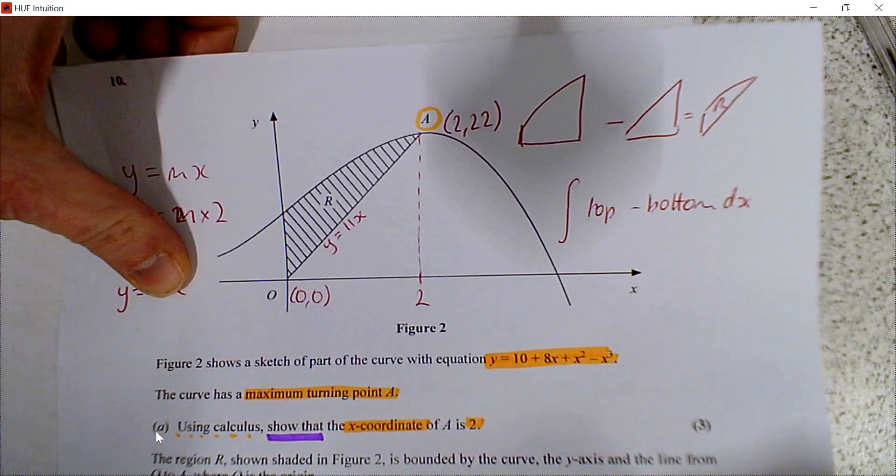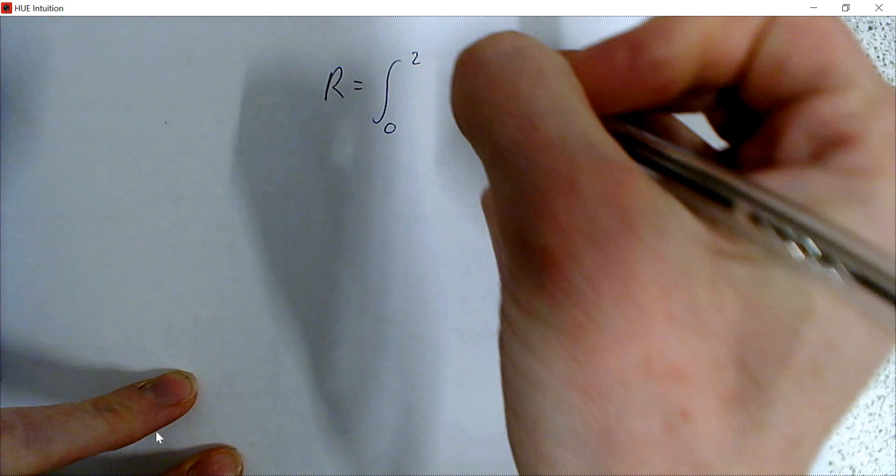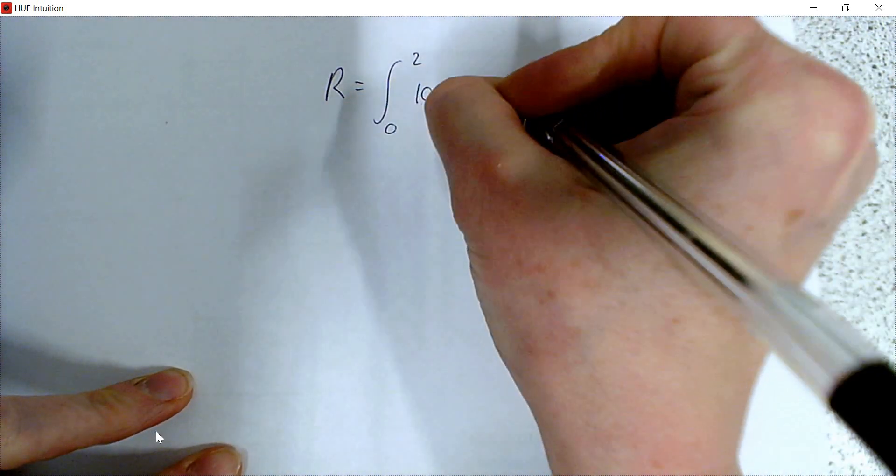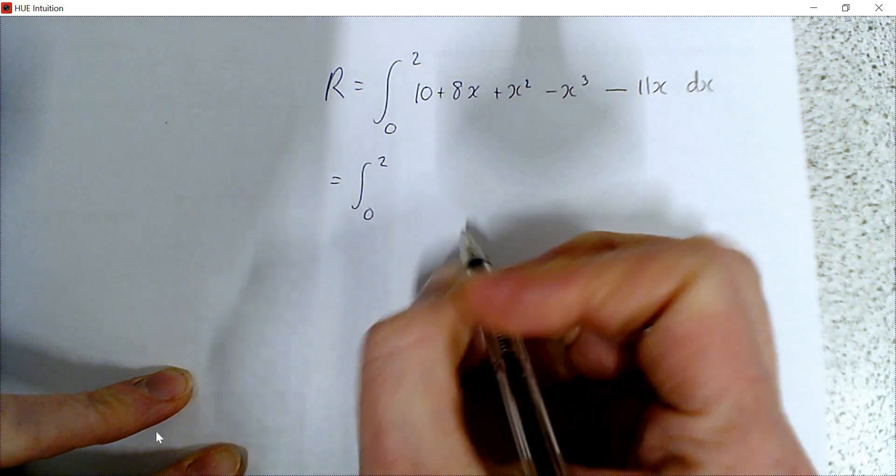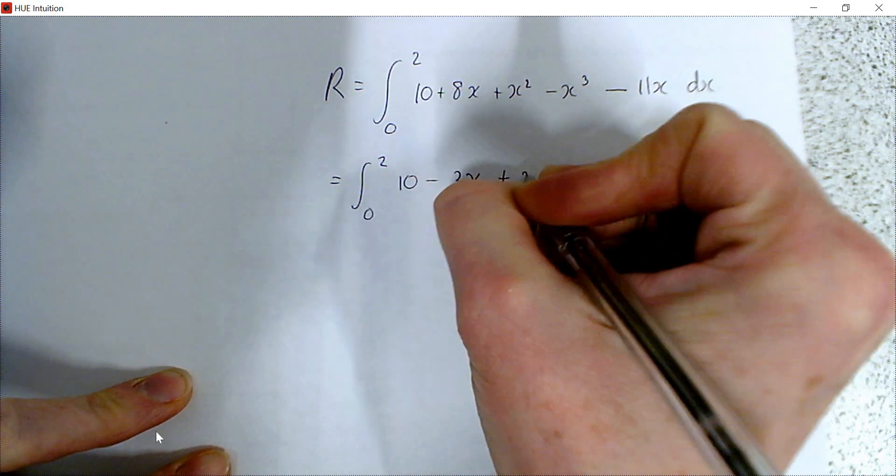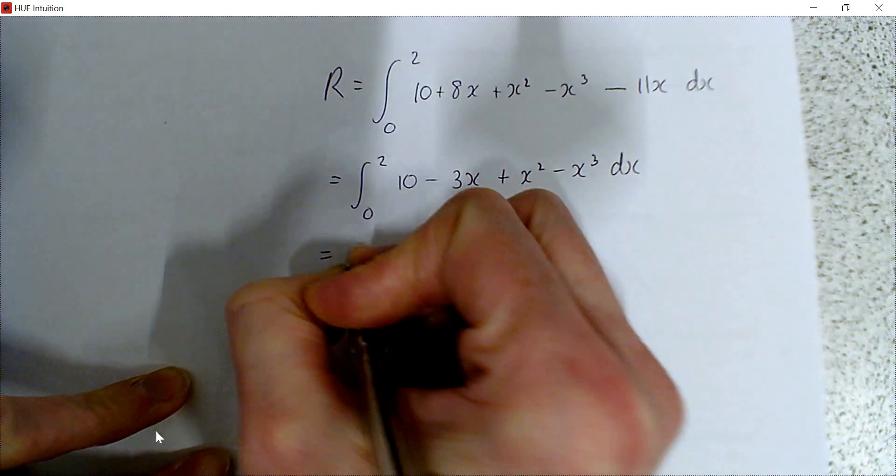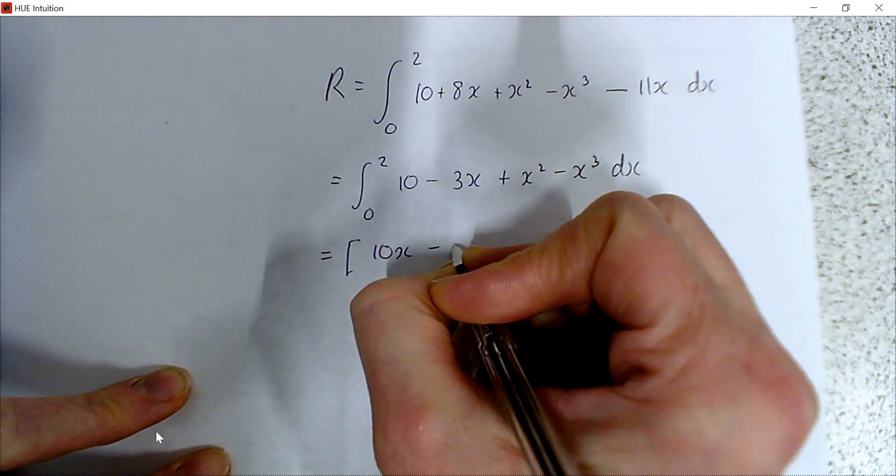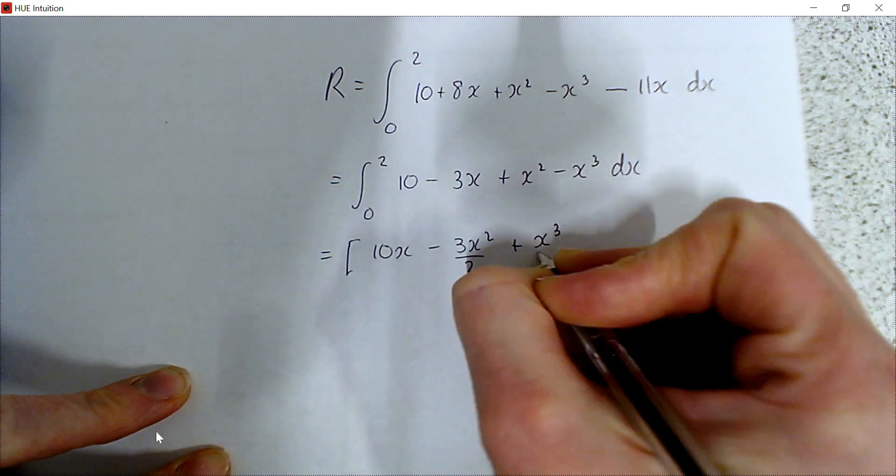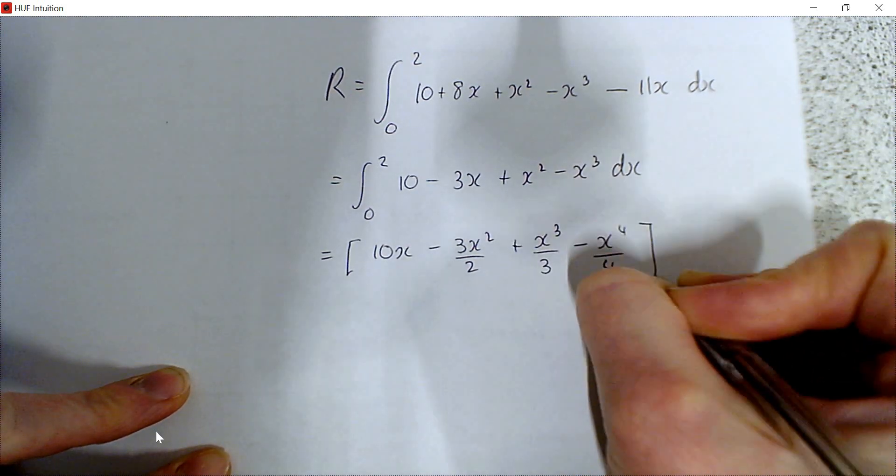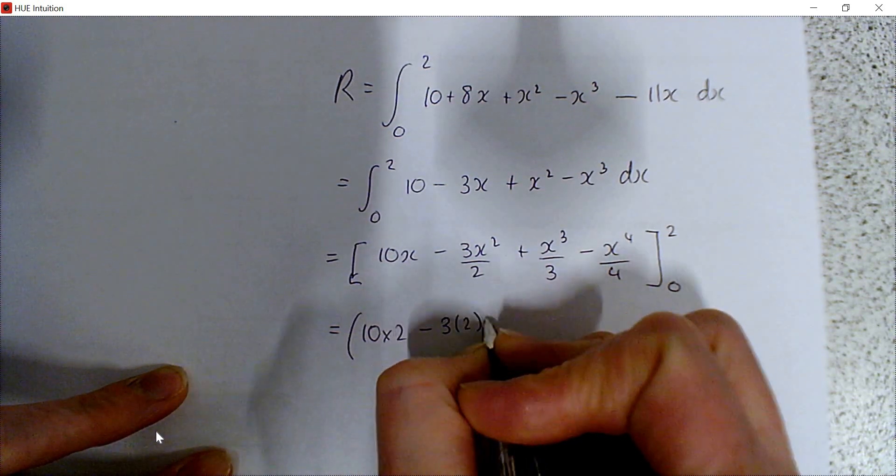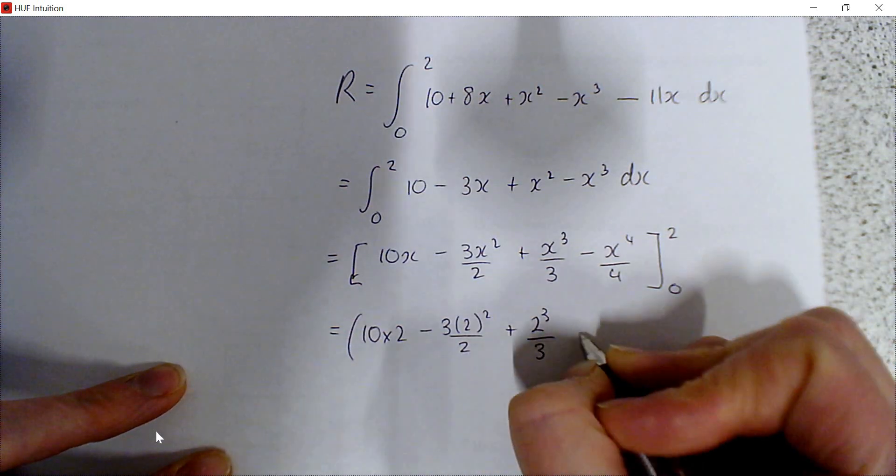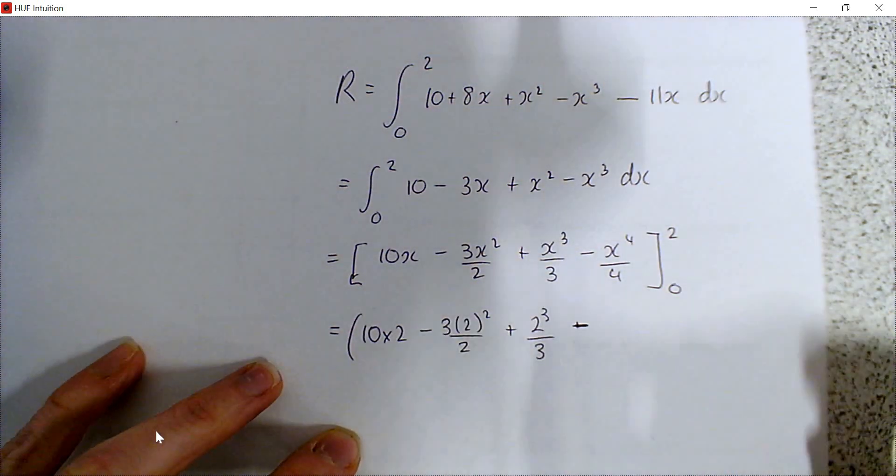When I'm doing my integration, top curve minus bottom curve. It's the integral from 0 to 2. Top curve was 10 plus 8x plus x squared minus x cubed. Take away the bottom curve, which is 11x. I could slightly simplify that before I integrate: I've got 8x minus 11x, so 10 minus 3x. Then we integrate as before. We just have a slightly different thing here. We've got 3x squared over 2 and we still have limits of 2 and 0. Then we substitute in our limits.